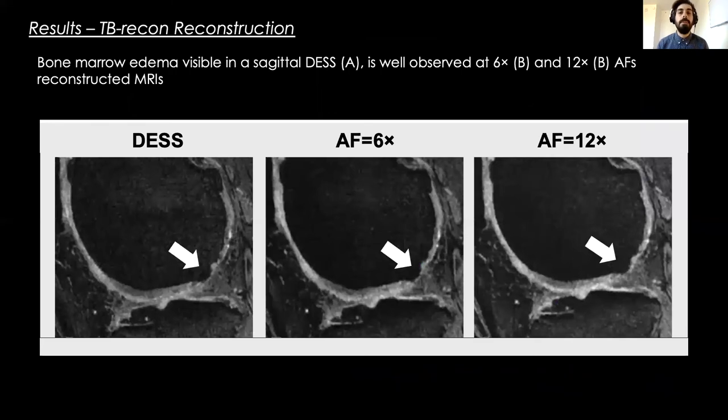This is an example of image reconstruction. The arrow points to a full thickness cartilage loss in lateral femoral cartilage. The same lesion is well observed also in the MRI reconstructed at high acceleration factor.